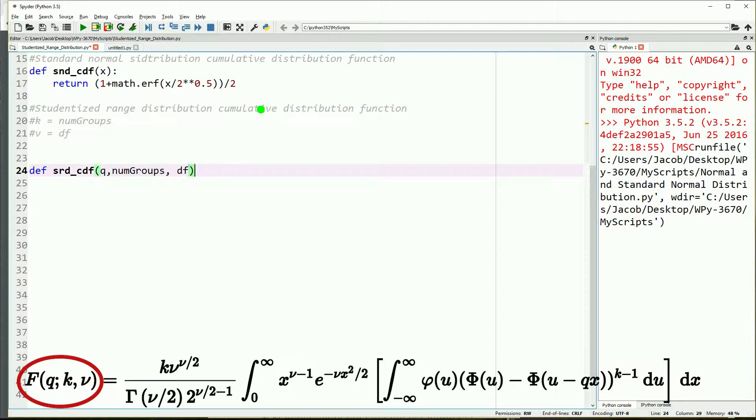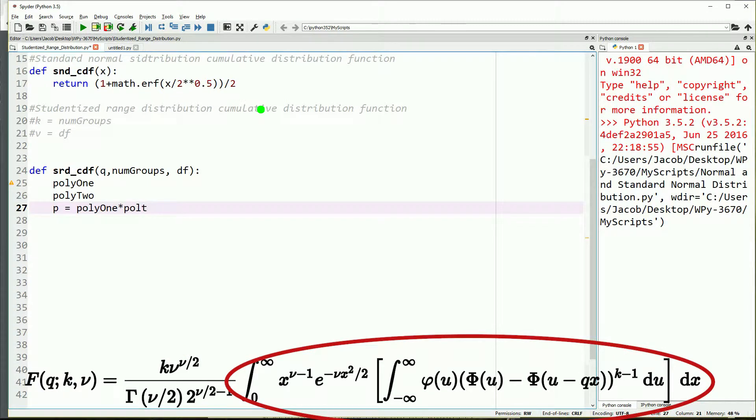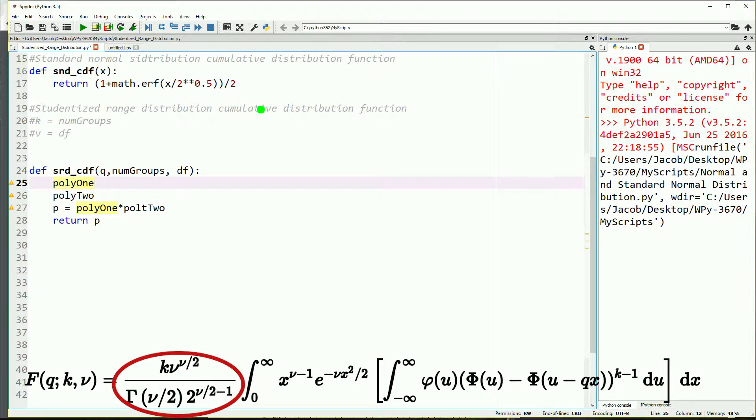This main cumulative distribution function is going to take q, which is the output from the Tukey's HSD, the number of groups in our ANOVA, and the degrees of freedom from the groups. We will break this up into polynomial 1 and polynomial 2, and then our p will simply be polynomial 1 times polynomial 2 and we will return p.